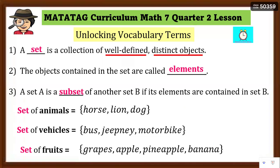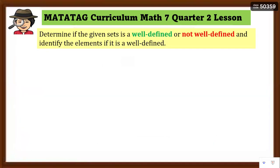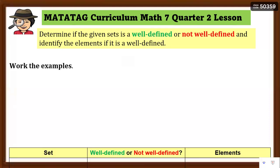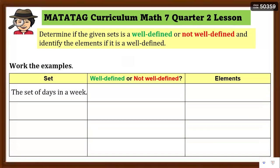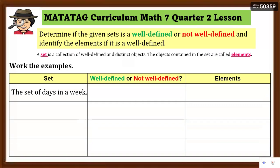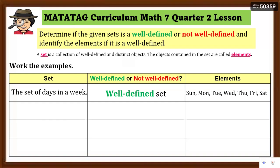Remember: a set must be well-defined and contain distinct objects. You are going to determine if a given set is well-defined or not well-defined, and if well-defined, identify its elements. For example, the set of days in a week — you can identify them: Sunday, Monday, Tuesday, Wednesday, Thursday, Friday, Saturday — so it is well-defined.